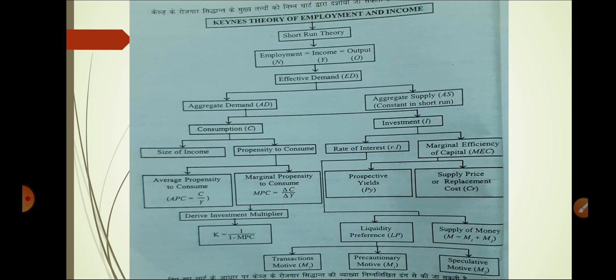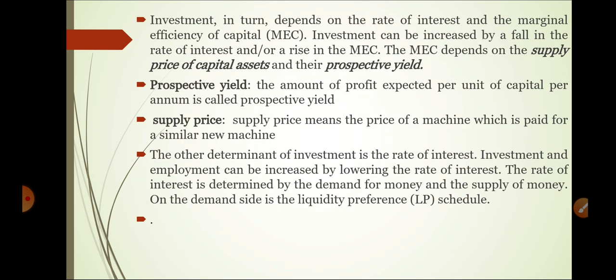Under marginal efficiency of capital, two things come: prospective yield and supply price, also called replacement cost. Prospective yield is the profit on your capital. Supply price or replacement cost means when you replace an old machine with a new machine, the cost you pay for that replacement is the replacement cost.